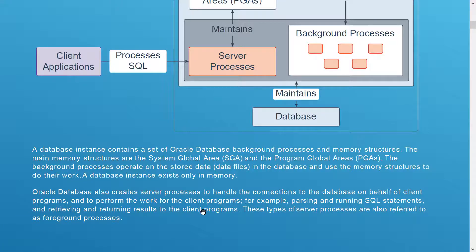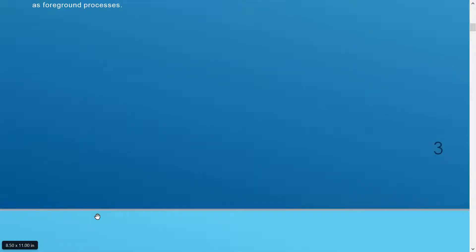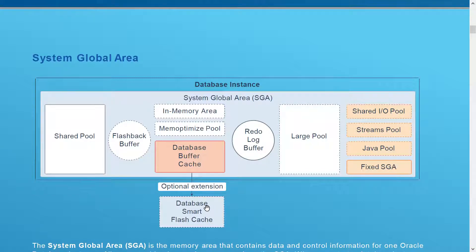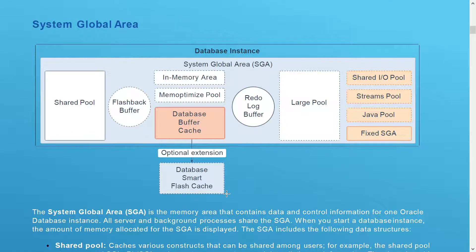These types of server processes are also referred to as foreground processes. Now we go deeper into memory components. The System Global Area (SGA) contains different sub-components such as Shared Pool, Flashback Buffer, Redo Log Buffer, Large Pool, In-Memory Area, Database Buffer Cache, Shared IO Pool, Stream Pool, Java Pool, Fixed SGA, and the optional Database Smart Flash Cache extension.